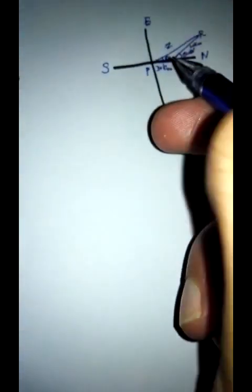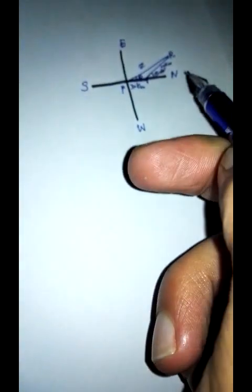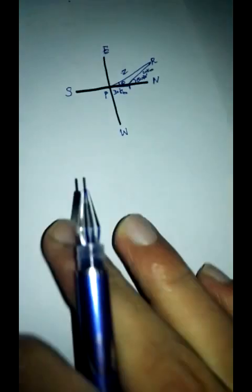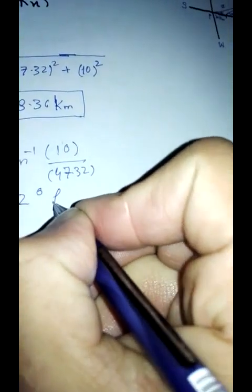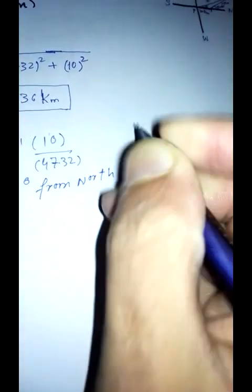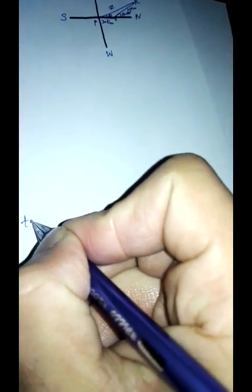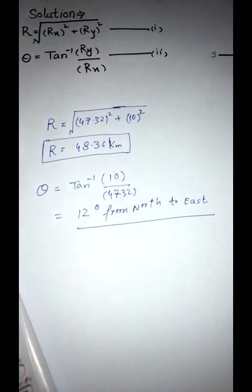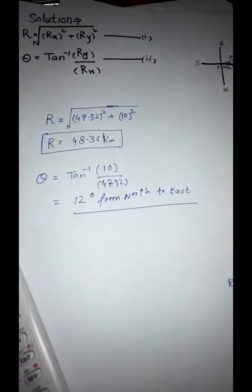That gives you nearly 11.93. After rounding up, we get 12 degrees. It is 12 degrees from north to east in the anticlockwise measure. So theta is from north to east, 12 degrees. So this is your answer. I hope it helps you.